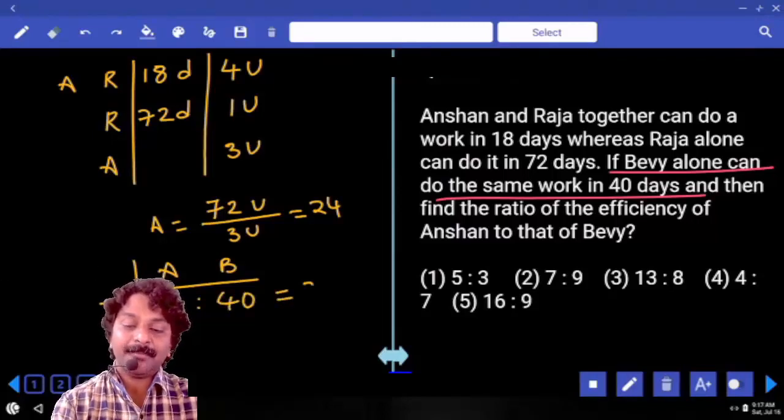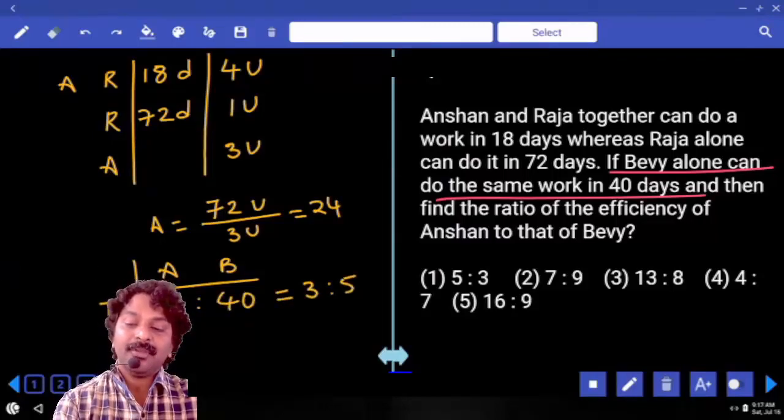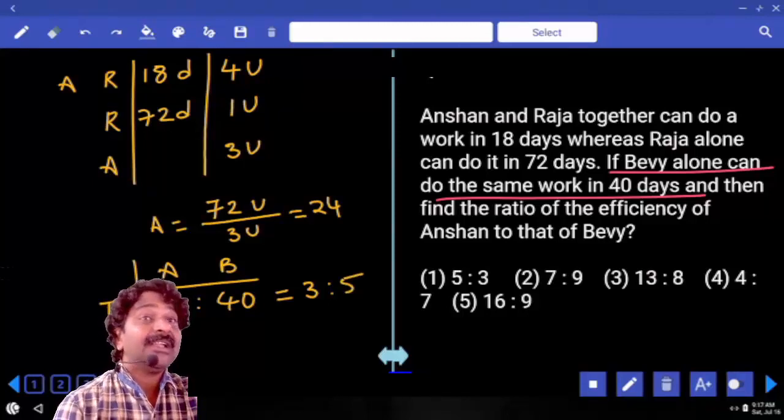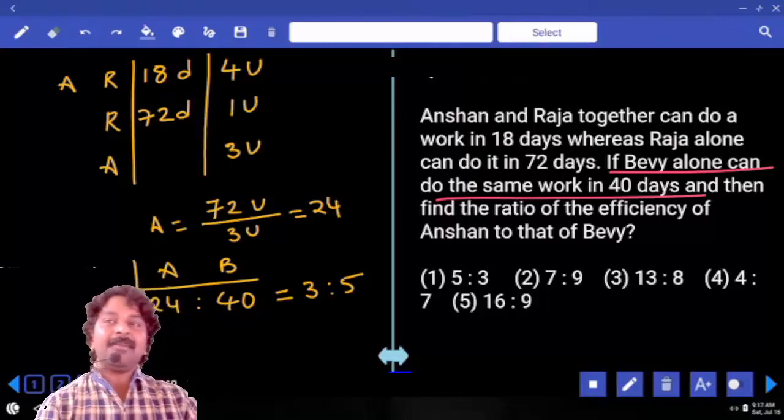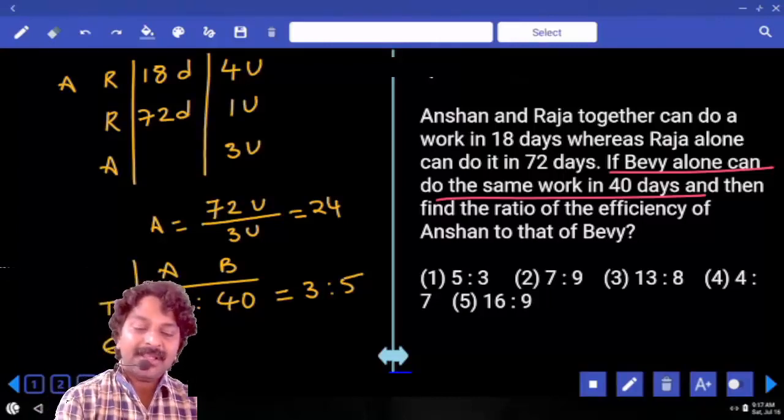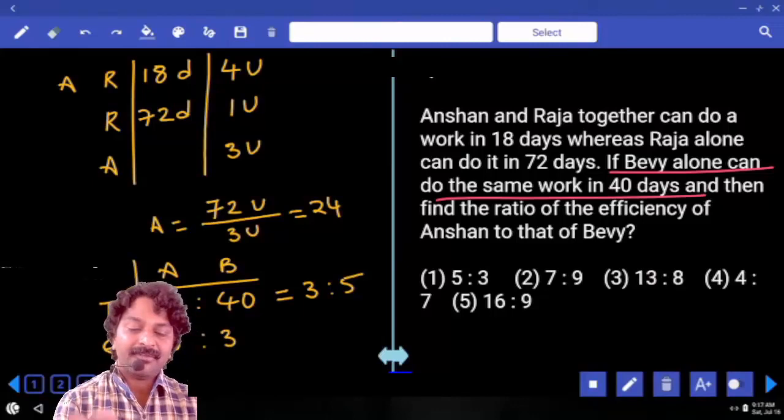Can you tell me what is the ratio here? 3 is to what ratio is this? Time ratio. But we were asked to calculate efficiency. Efficiency and time both are inversely proportional. The ratio must be 5 is to 3.